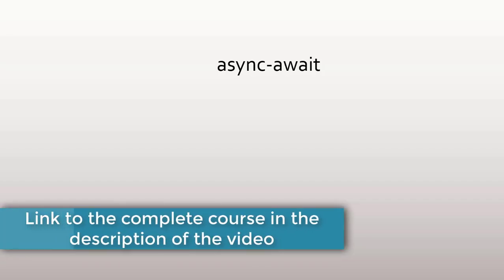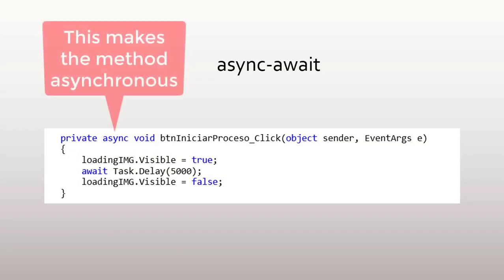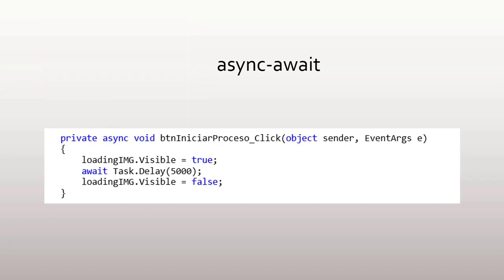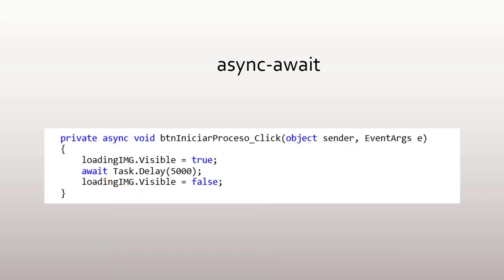In modern C# code, in order to use asynchronous programming, we use async/await. The idea is that if we have a method in which we want to use asynchronous programming, we mark it with the async keyword, and for those asynchronous operations for which we do not want to block the execution thread, we use the await operator. When we use await, we are freeing the current thread from having to wait for the execution of the task, thus avoiding blocking the current thread so it can be used for another task.